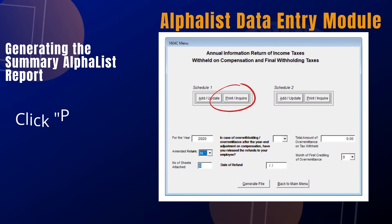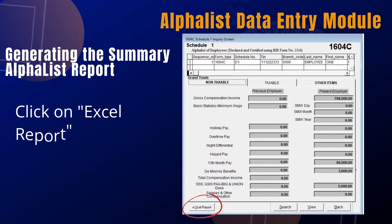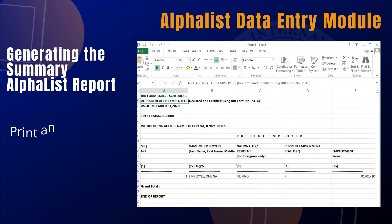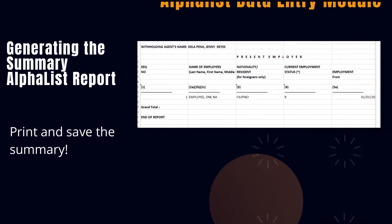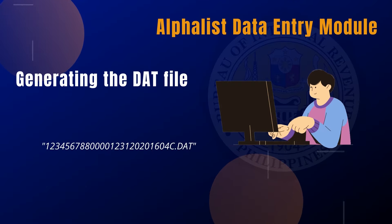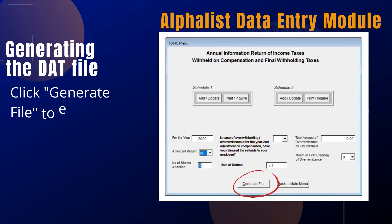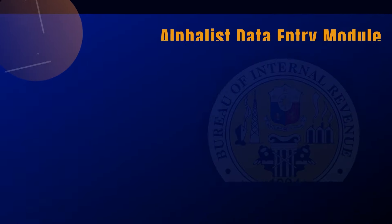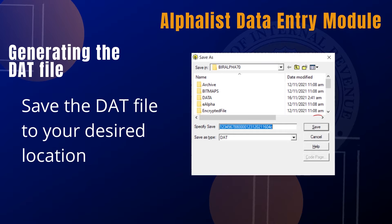Now let us generate the Summary Alphalist report. In the 1604-C menu, click on Print/Inquire. On the lower left portion, hit on Excel Report. The summary of the schedule will then be generated in Excel format. Don't forget to print and save a copy of this report. We are now ready to generate the .dat file. On the 1604-C menu, click Generate File. The .dat file will then be generated. Click on Save to save the generated .dat file to your desired location in your computer.